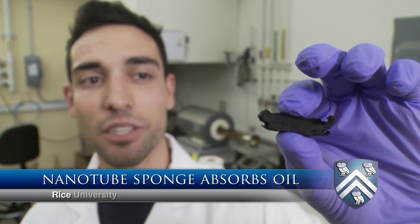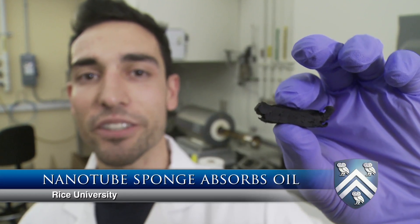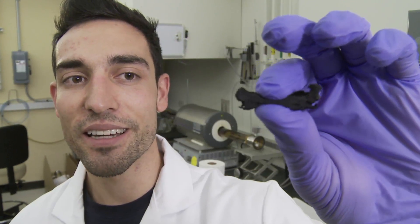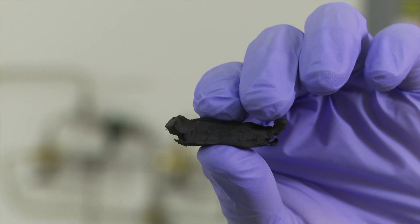Here in my hand is a three-dimensional carbon nanotube sponge material. It's an interesting material because it's elastic, compressible, and flexible, very lightweight,